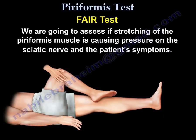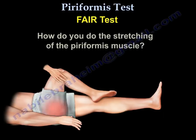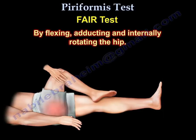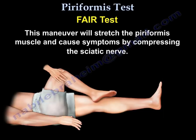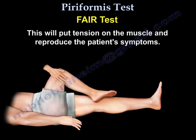We're going to assess if stretching of the muscle is causing pressure on the sciatic nerve and patient symptoms. How do you do the stretching of the pariformis muscle? You do that by flexing, adducting, and internally rotating the hip. This maneuver will stretch the pariformis muscle and will cause symptoms because it will compress the sciatic nerve. It will put tension on the pariformis muscle and reproduce the symptoms of the patient.